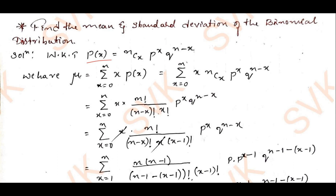The mean μ is defined as summation from x=0 to n of x·p(x). We know what p(x) is — we just defined it — so we substitute that: p(x) = nCx · p^x · q^(n−x).